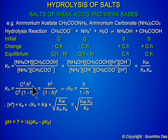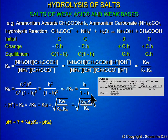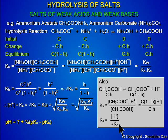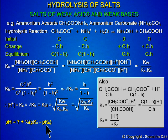Writing down the equilibrium concentrations, we get the square root of Kh equal to H divided by (1 minus H). We also know that Ka equals C times (1 minus H) times the hydrogen ion concentration divided by CH. Therefore Ka equals the hydrogen ion concentration divided by the square root of Kh. Eliminating Kh from these two equations, we get pH equal to 7 plus half (pKa minus pKb). As seen here, the pH is independent of concentration.